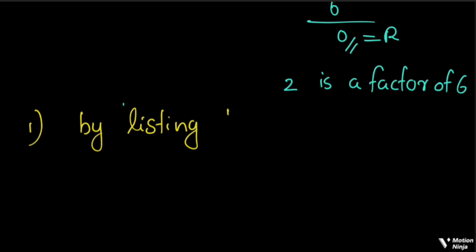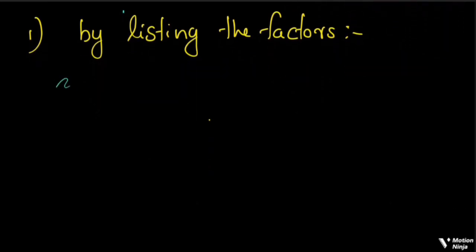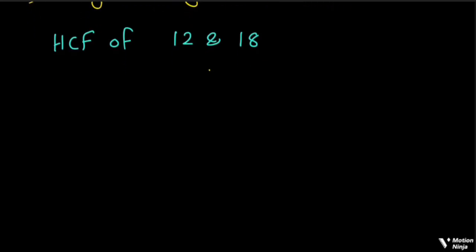Here I am listing the factors. I will take the HCF here. First, we will list the factors in HCF. So, find the HCF of simple numbers. If we have the HCF of 12 and 18, we will have the factors of 12.